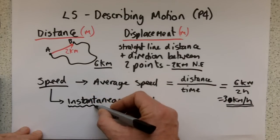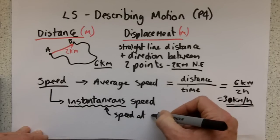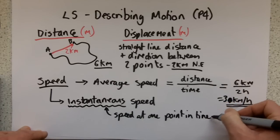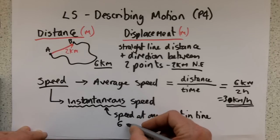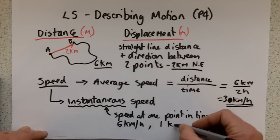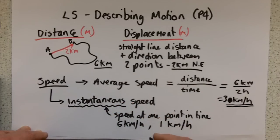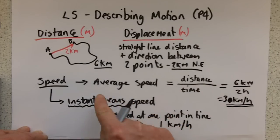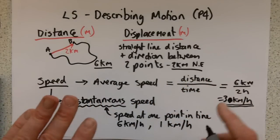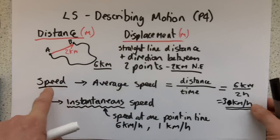However, the instantaneous speed is the speed at one particular point. If the average was three kilometres per hour, at some places they could have been doing six kilometres per hour, at other places they could have been doing one kilometre per hour. It's the instant that the speed is measured at which is the instantaneous speed, whereas the average speed is the total distance divided by the total time — so all those variations are evened out. OK, so distance, displacement, and speed.